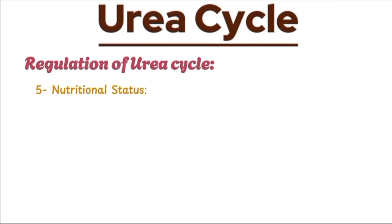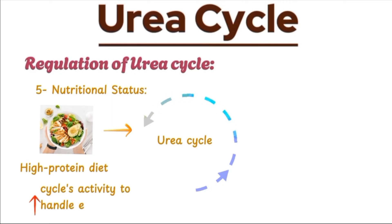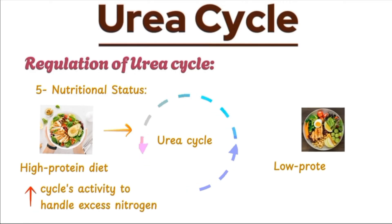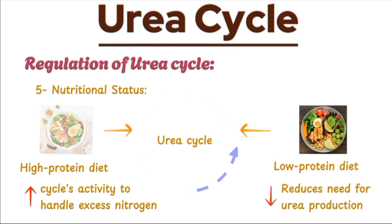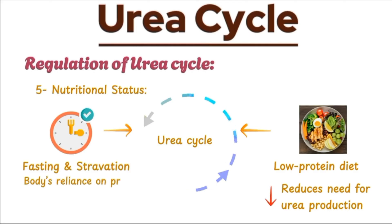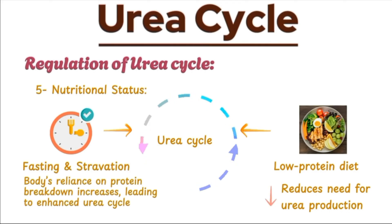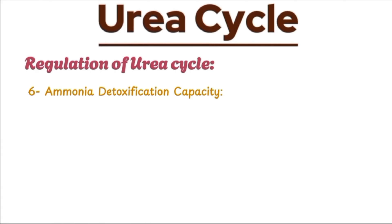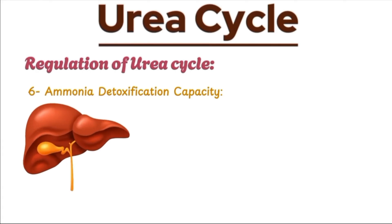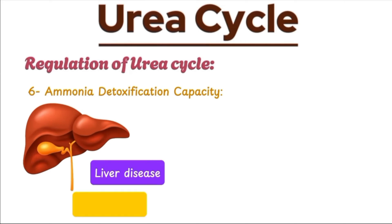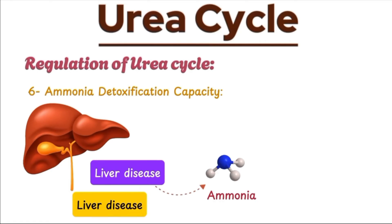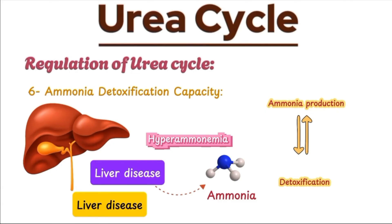The overall nutritional status of the body is another key factor in urea cycle regulation. A high-protein diet increases the cycle's activity to handle the excess nitrogen, while a low-protein diet reduces the need for urea production. Similarly, during fasting or starvation, the body's reliance on protein breakdown for energy increases, leading to enhanced urea cycle activity to manage the resulting ammonia. Finally, the liver's capacity to detoxify ammonia is a crucial consideration. While the liver is highly efficient, this capacity can be overwhelmed in cases of liver disease or metabolic disorders, leading to dangerous levels of ammonia in the blood, known as hyperammonemia. Therefore, the regulation of the urea cycle is essential to maintaining a delicate balance between ammonia production and detoxification, safeguarding the body from toxicity.